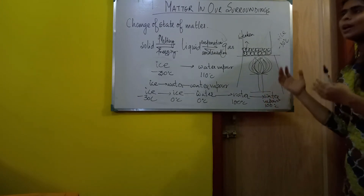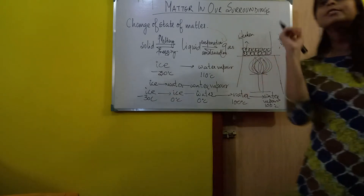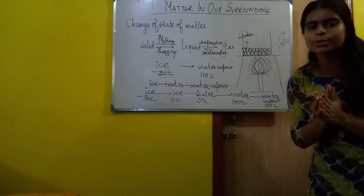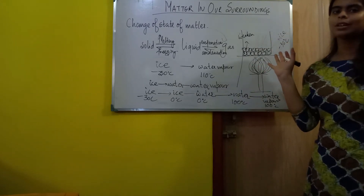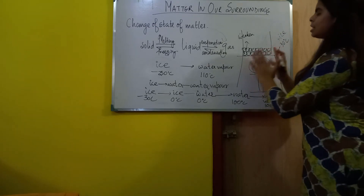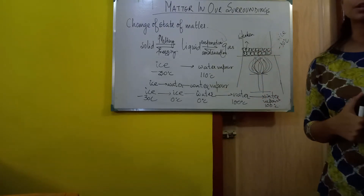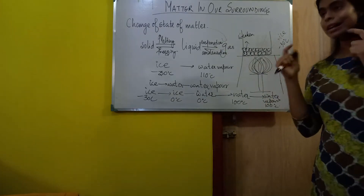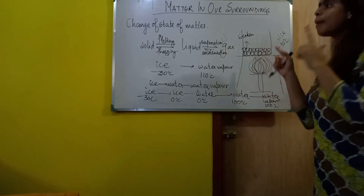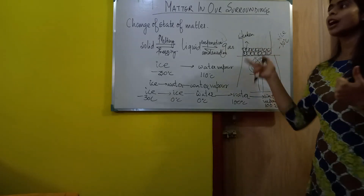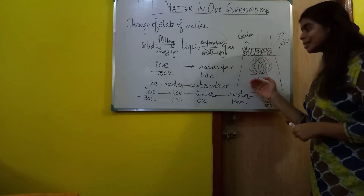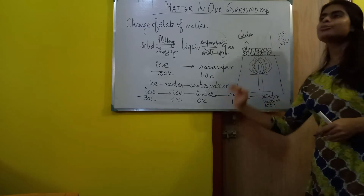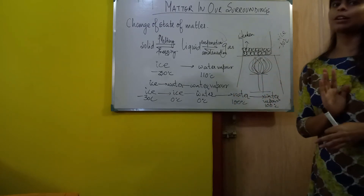When the water reaches 100 degrees, you will see that water is converting to water vapor, but again there is no change in temperature — the temperature is not changing even though you are providing heat continuously. Again, this heat is acting as a hidden heat, that is latent heat. This heat is absorbed by the particles to overcome the molecular force of attraction of the liquid. As they overcome the force of attraction, the liquid particles start converting to gaseous particles.